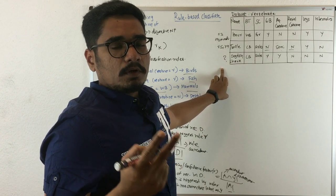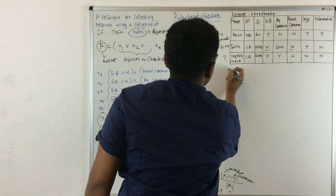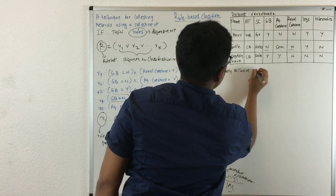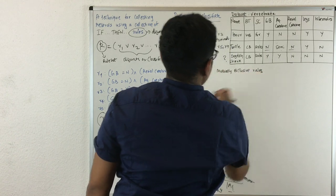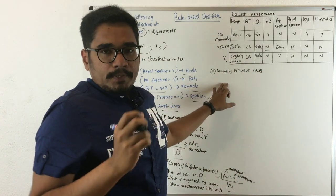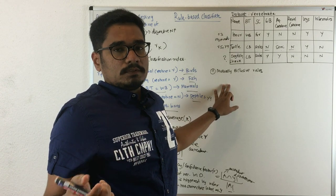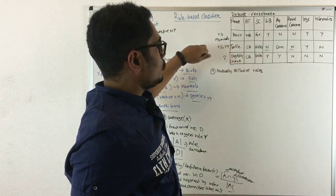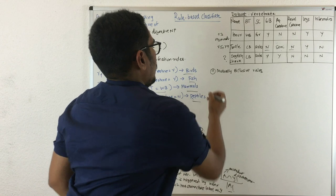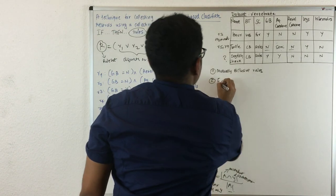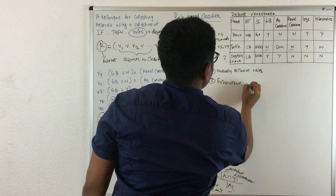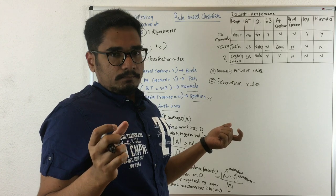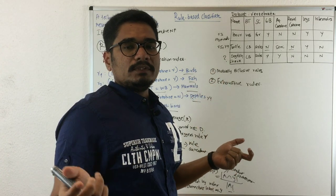First rule is mutually exclusive rules - for one particular record it should not have two rules or more than one rule. Like we've seen, for one record we had two rules, which should not be the case. Second is exhaustive rules - for each particular record it should trigger only one rule throughout the dataset.